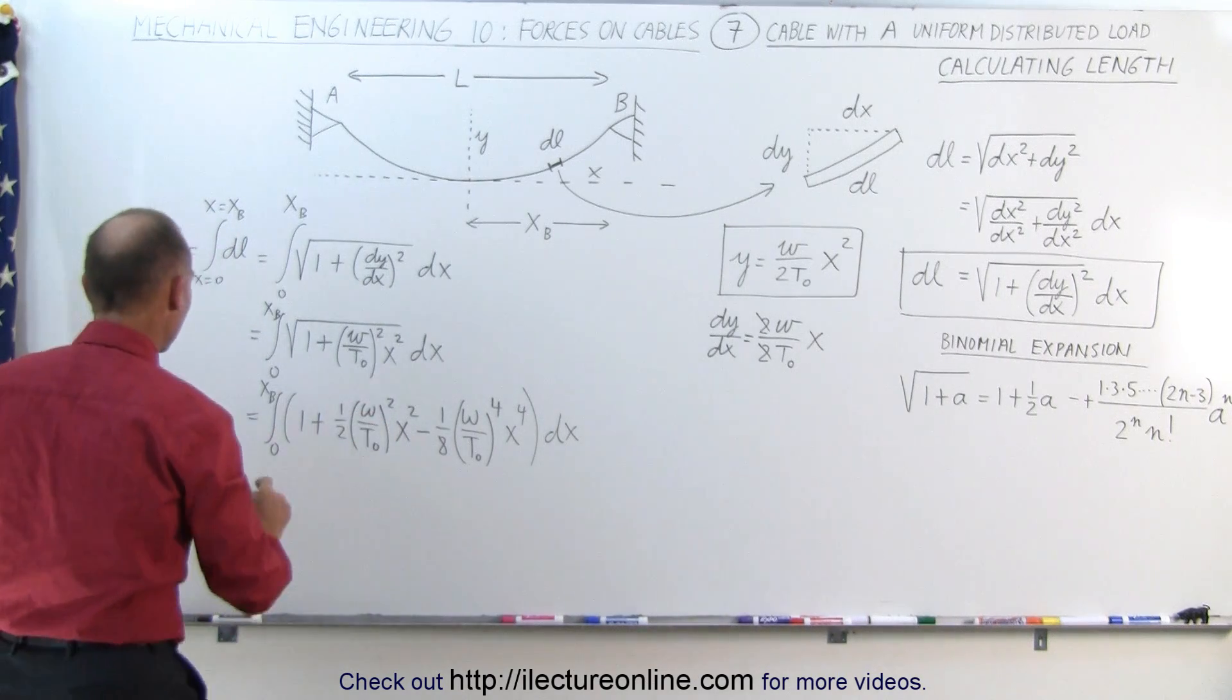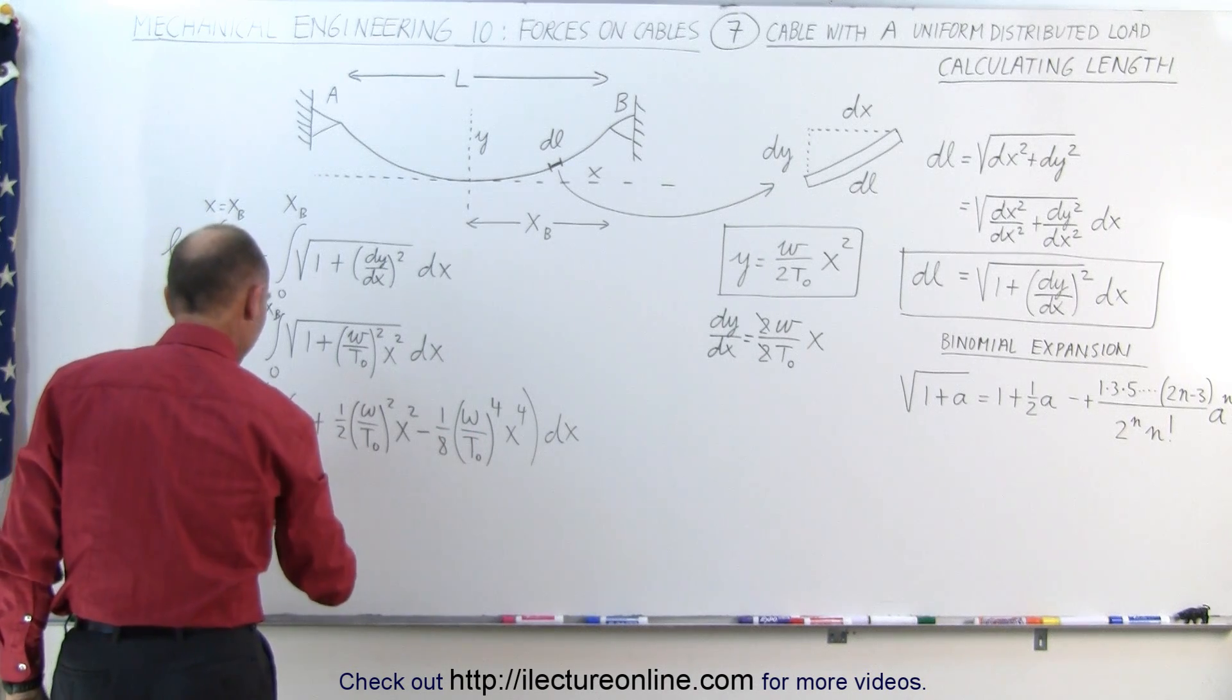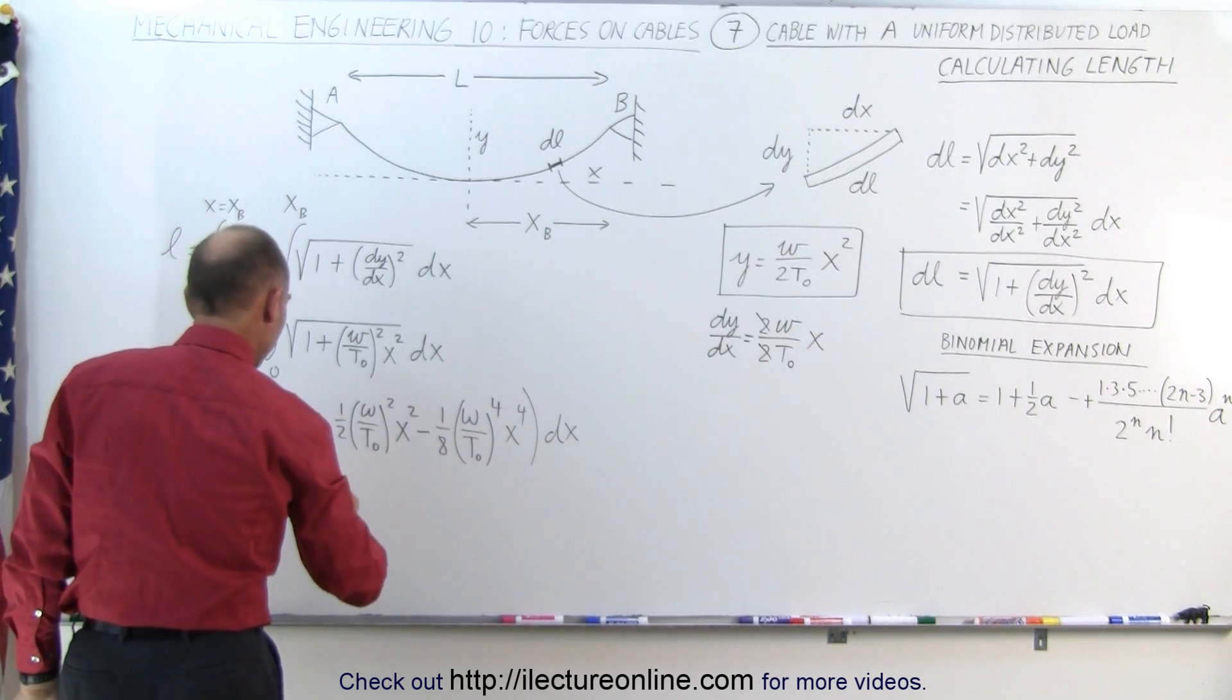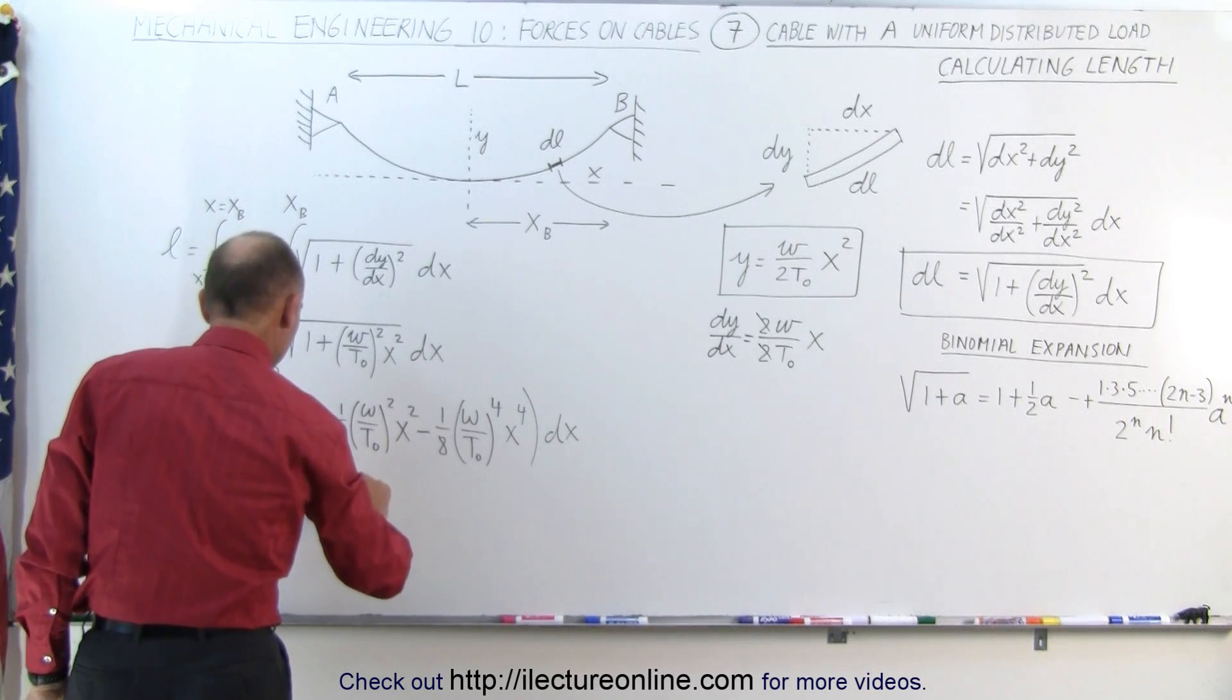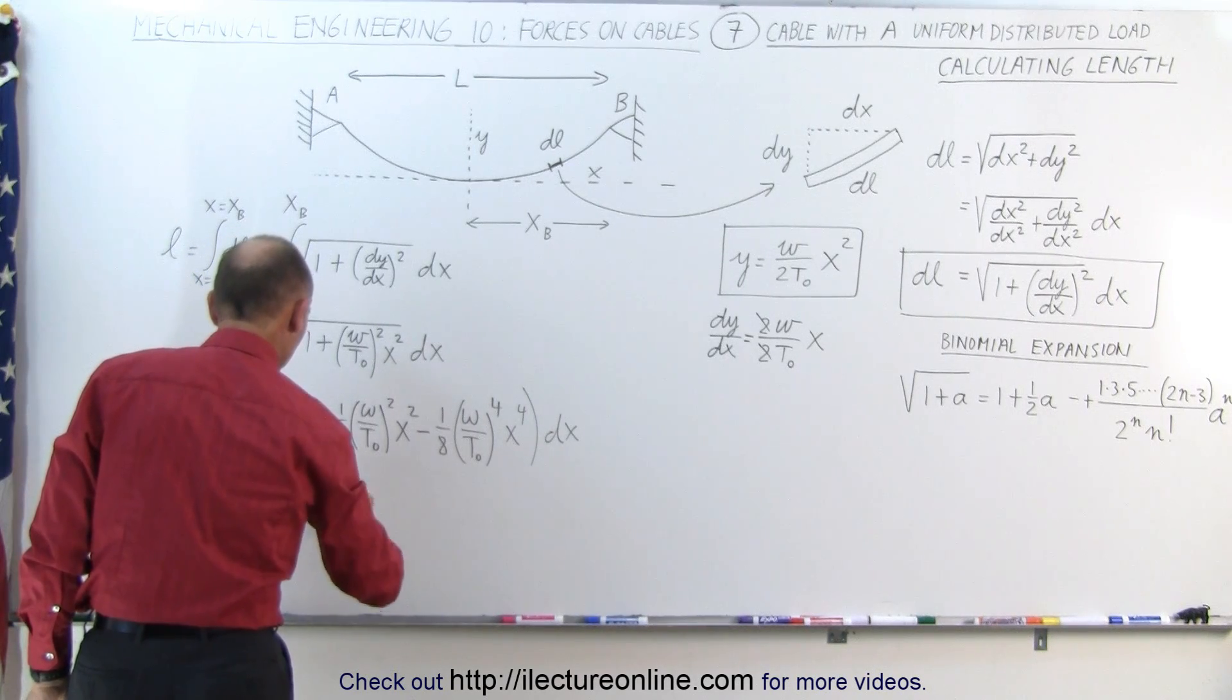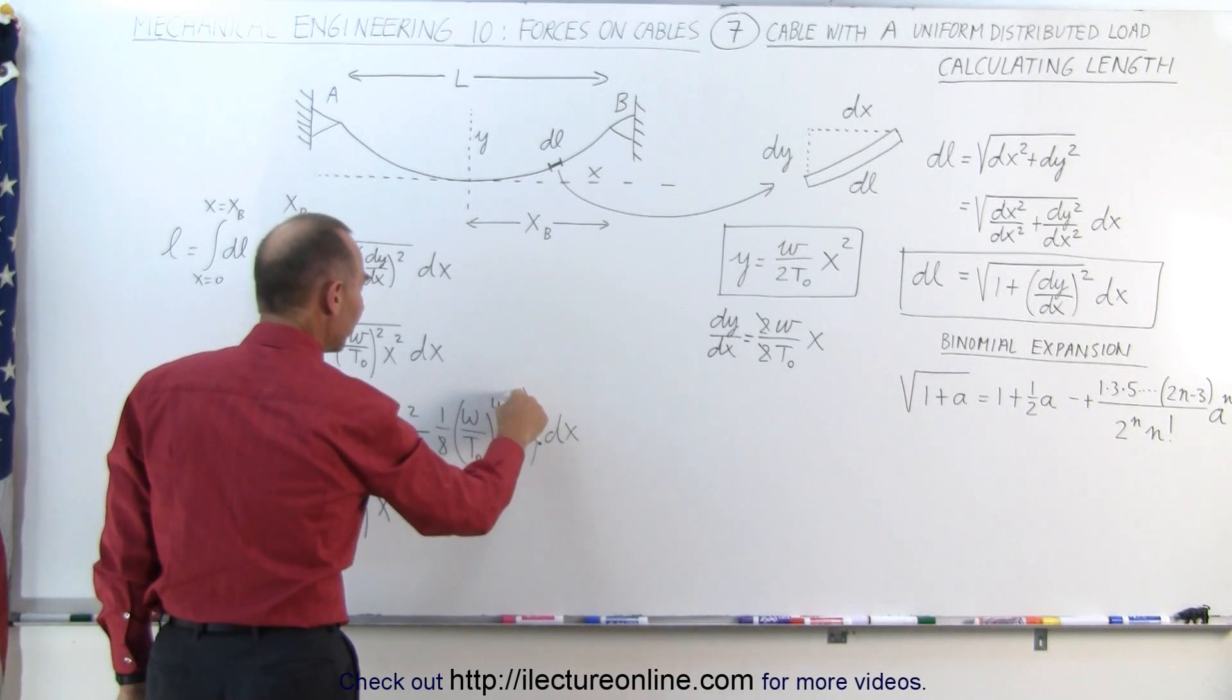Now we can integrate this. We get the following. This is equal to, when we integrate, we get X. This will be X cubed divided by 3. So it would be plus 1/6 times (omega/T sub naught) squared times X cubed. And this would be X to the fifth. So we bring this to the bottom, that becomes minus 1/40 times (omega/T sub naught) quantity to the fourth power, X to the fifth power.